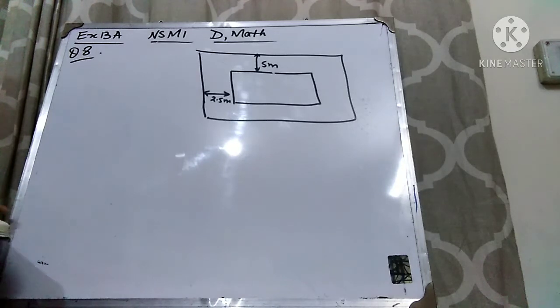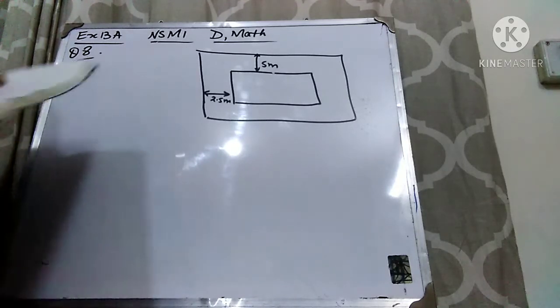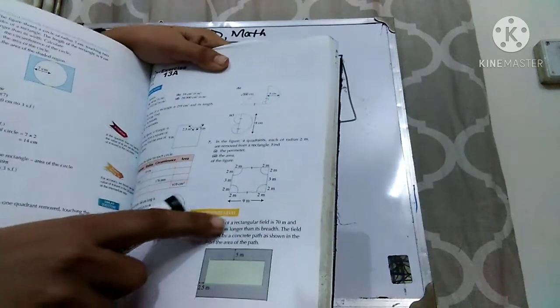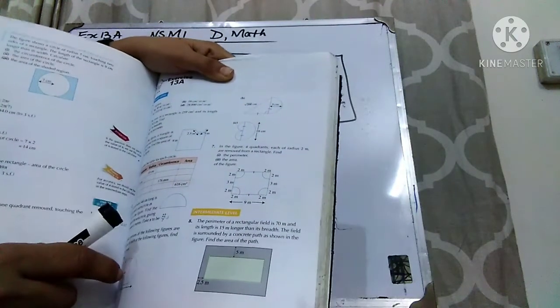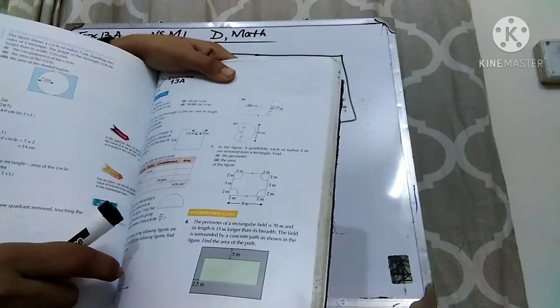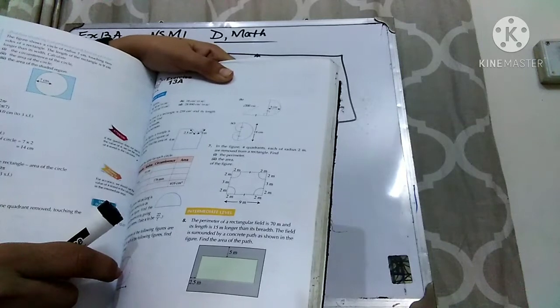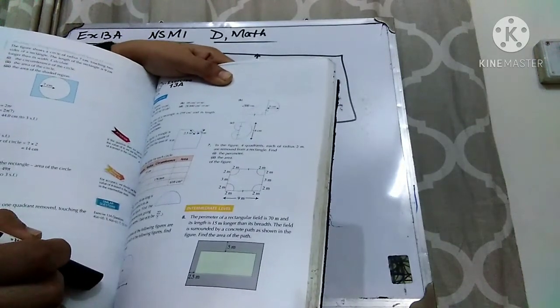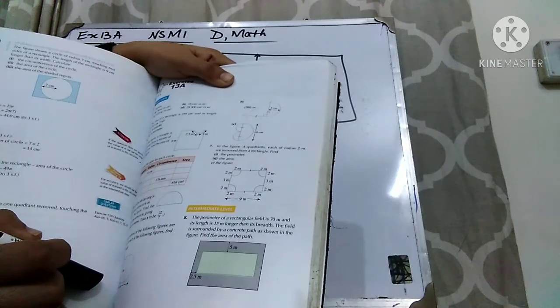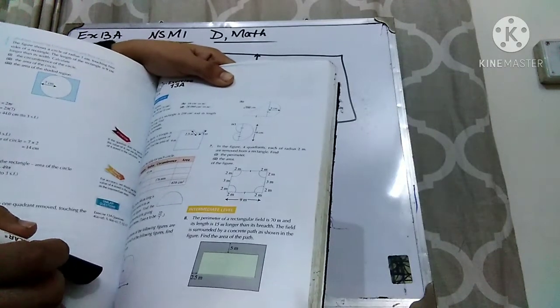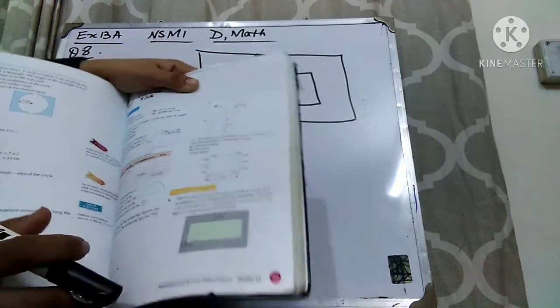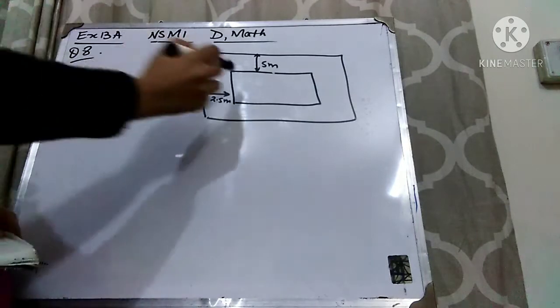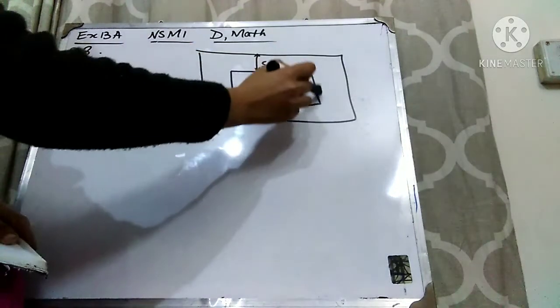Alright students, question number 8 is here. You can see the question. So this is the question and it's written that the perimeter of a rectangular field is 70 meters and its length is 15 meters longer than its breadth. The field is surrounded by a concrete path as shown in the figure. Find the area of the path. So we have to find out the area of the path.